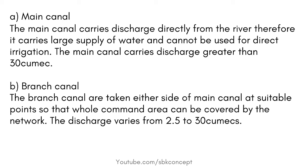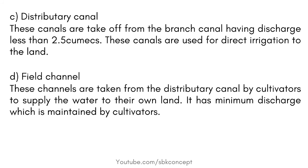Branch Canals are taken from either side of the Main Canal at suitable points so that the whole command area can be covered by the network. The discharge varies from 2.5 to 30 cumecs. Distributory Canals are taken off from the branch canal having discharge less than 2.5 cumecs, and these canals are used for direct irrigation to the land. Field Channels are taken from the Distributory Canal by cultivators to supply water to their own land. It has minimum discharge, which is maintained by cultivators.